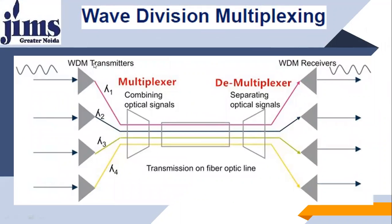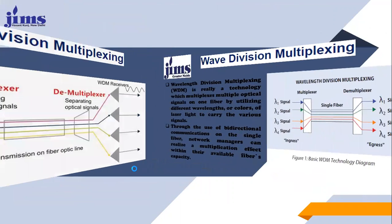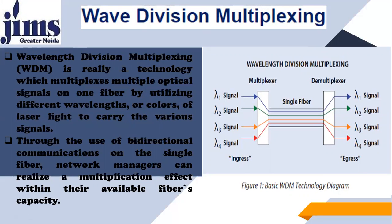In the WDM transmitter diagram, lambda 1, lambda 2, and lambda 4 are all multiplexed. The optical multiplexer shares the same bandwidth, and T-demultiplexers separate the signal according to receivers 1, 2, 3, and 4. Different signals having different wavelengths are all multiplexed together over a single fiber that supports lambda 1, lambda 2, and lambda 4. WDM demultiplexers then separate all signals of different wavelengths accordingly. This is the Wavelength Division Multiplexing technology.